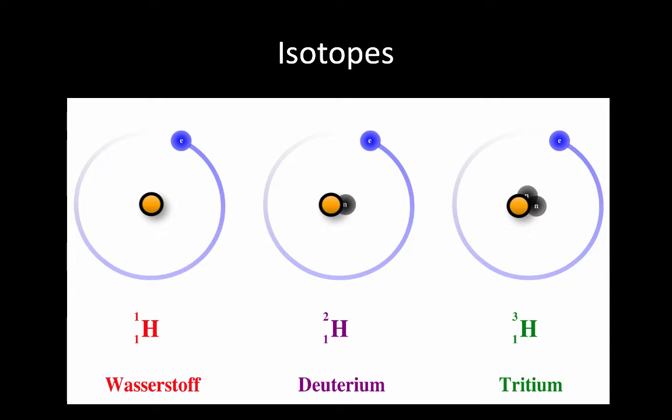They are all neutral, so they each have a negatively charged electron to balance out the positively charged proton. The only difference between these three are the number of neutrons.